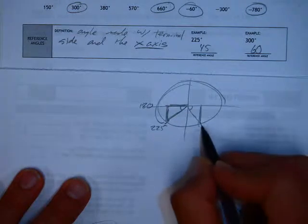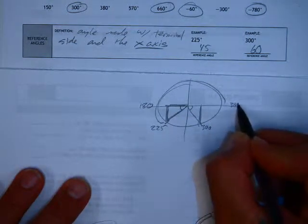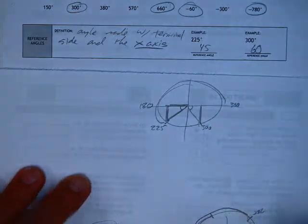So again, if this is 300 and we know that the x-axis is at 360, you subtract those two and you'll get that 60-degree difference.